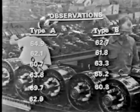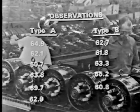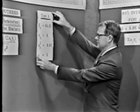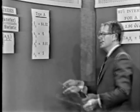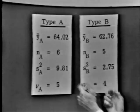This is the raw data, and we can encapsulate all the information in these data by computing the averages and the estimates of the variance. The average for motors of type A turned out to be 64.02, and the average for motor type B is 62.76. The estimate of the variance for type A motors is 9.81 with five degrees of freedom, and the estimate of the variance for type B motors is 2.75 with four degrees of freedom.